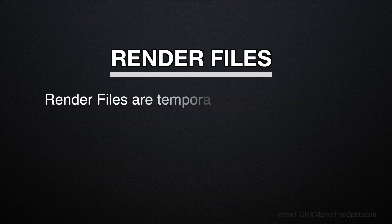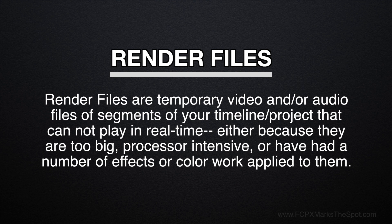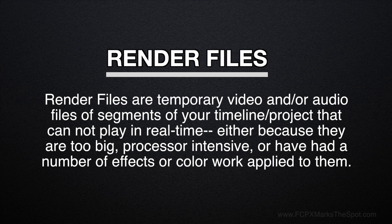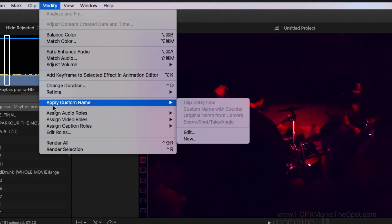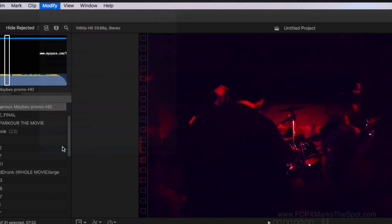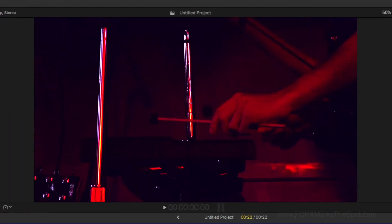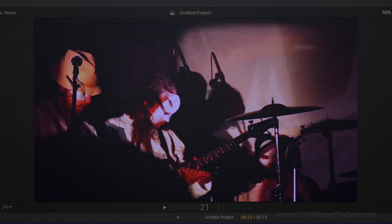Render files are essentially full transcodes of a clip, or portion of a clip in your timeline that has trouble playing in real time, either due to its robust size or because of effects and color that's been added. For example, 4K RED raw files will more than likely not play smoothly on most systems. So you can render that portion of the timeline that's giving you trouble, and it'll play smoothly because it creates ProRes files in the background for playback.